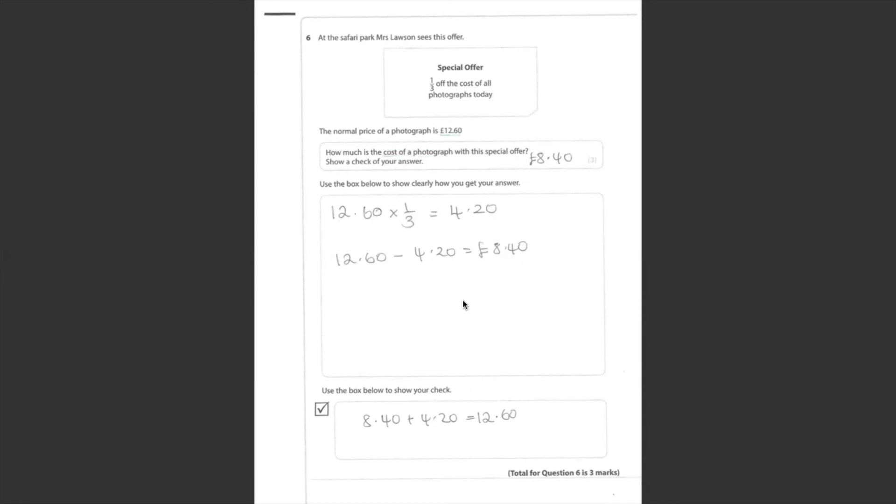The next question says, show your check. How do we show our check? We do the inverse of this previous working here. The inverse of subtraction is addition. Here I do £8.40 add £4.20, which gives me the original price, which is £12.60. I can as well use my working at the top here. I can do £4.20 times 3 will give me £12.60.